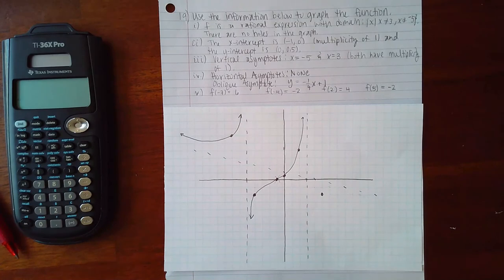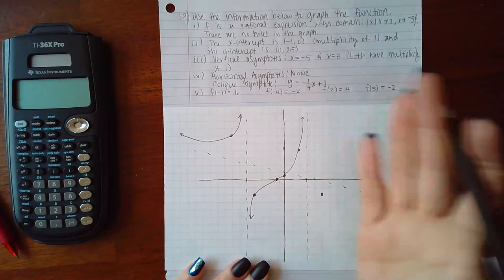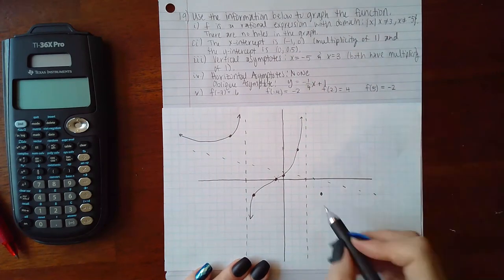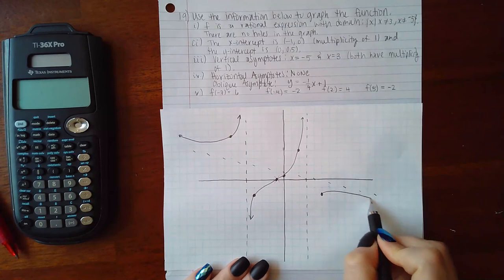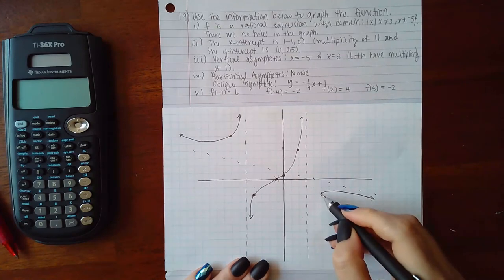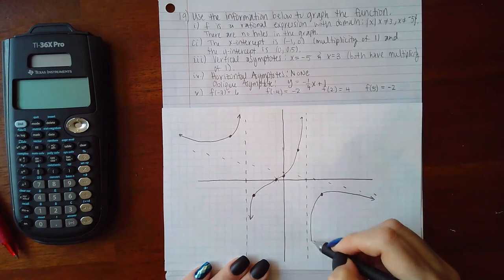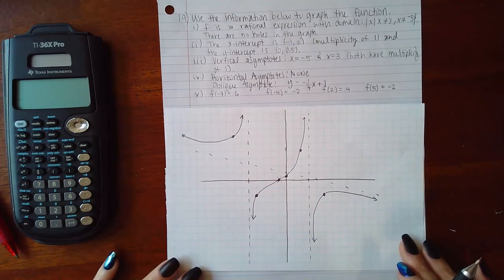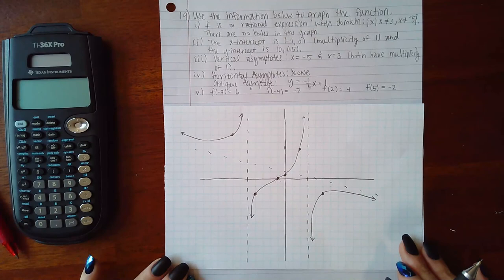And then finally over here to the right of this vertical asymptote, you cannot cross that line, so you have no choice but to trail against it. You cannot cross this line, so you have no choice but to trail against it. And so the graph of your function should look something like this.